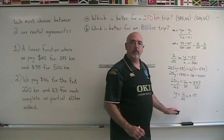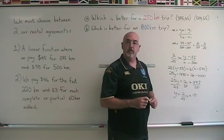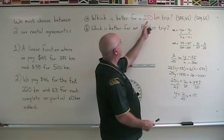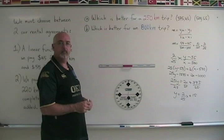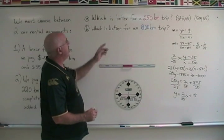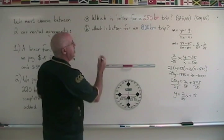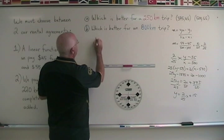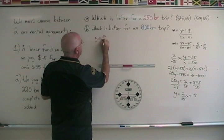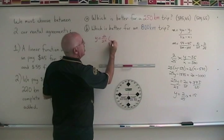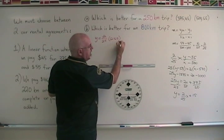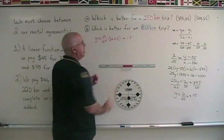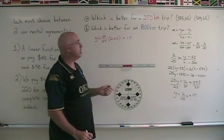We have derived the equation of our straight line, and we now can use it to figure out how much it would cost for each of these trips. Starting with our 250 kilometer trip, we have y equals 2 over 25 times 250 plus 15.